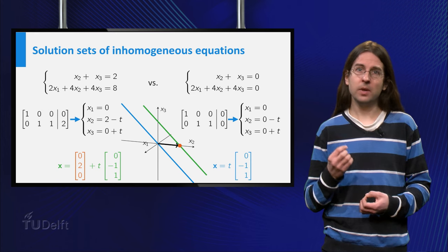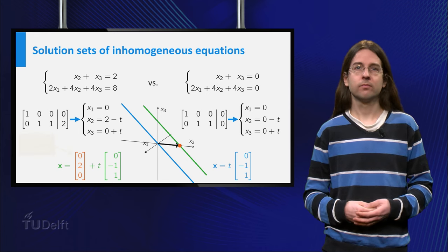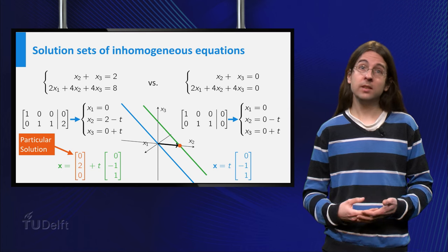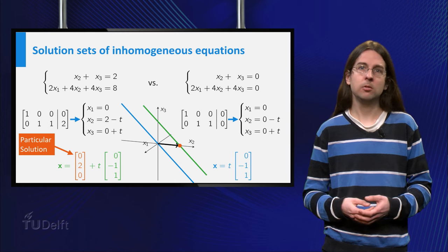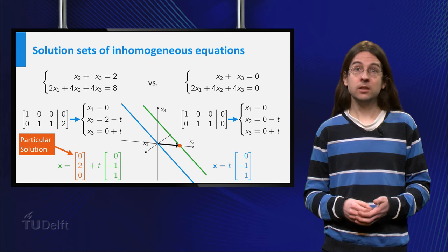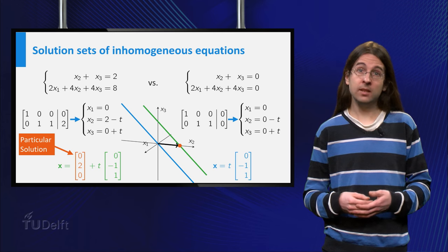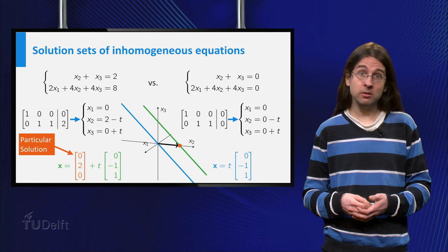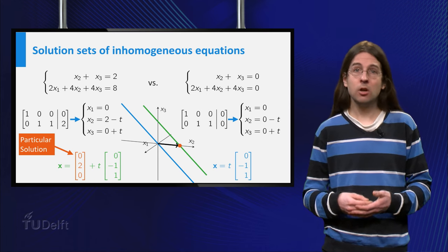However, it is shifted by a vector to the orange point, and thus does not run through the origin anymore. This orange vector is a solution of the inhomogeneous system of equations (take t equals zero) and is called a particular solution. Just like for linear differential equations in calculus, the general solution to an inhomogeneous equation can be expressed as the sum of a single particular solution and the general solution of the homogeneous equation.